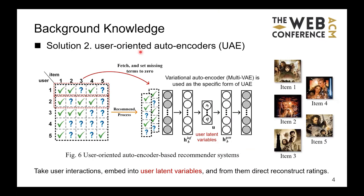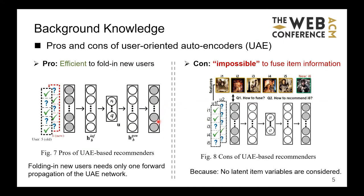Recently, an emerging solution for recommendation tasks is called the user-oriented autoencoder, or UAE for short. It first fetches the rating vector of a user from the user-item interaction matrix and sets the missing values to zero, then embeds the rating vector into a user latent variable. If the autoencoder is variational, or VAE for short, the user latent variable is a Gaussian random vector. The model then reconstructs ratings for all items from the latent variable, fetches ratings for previously uninteracted items, and ranks them so new relevant items can be recommended.